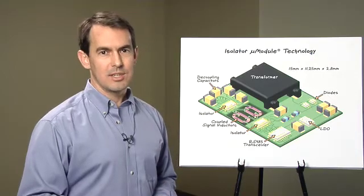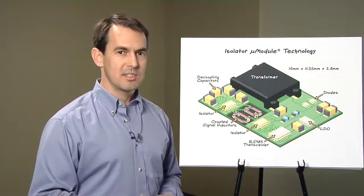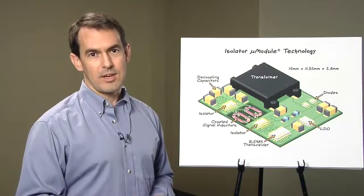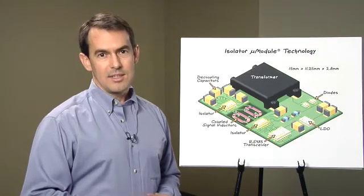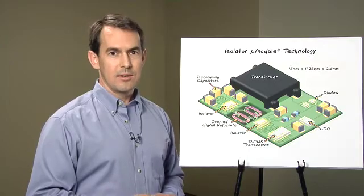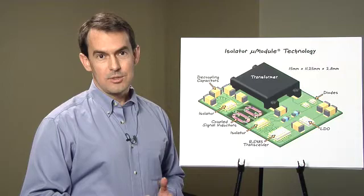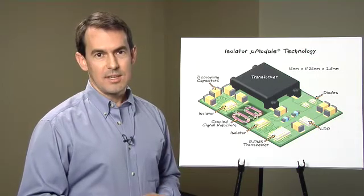RS485 is a differential signaling interface well suited to long distance communication, and the standard was designed to handle a plus minus 7 volt ground difference. Adding the isolation of the LTM2881 greatly extends the common mode operating range from 7 volts to nearly 4000 volts peak while maintaining communication.